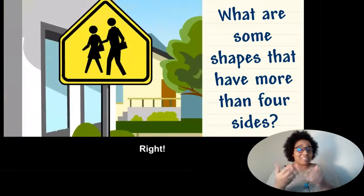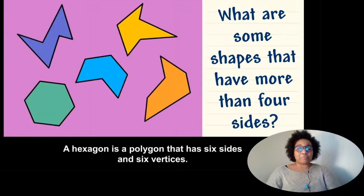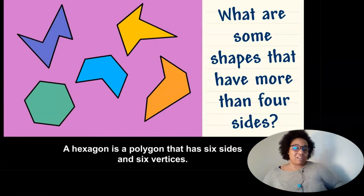Right, some safety signs are pentagons. A hexagon is a polygon that has six sides and six vertices.